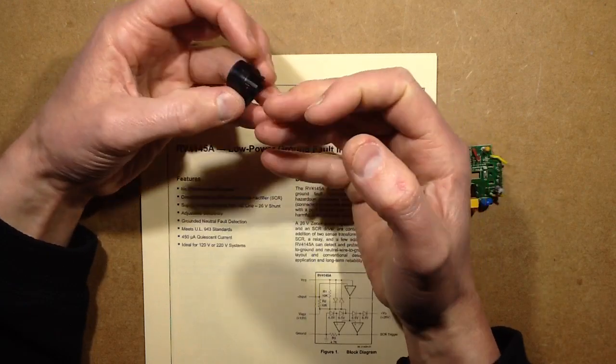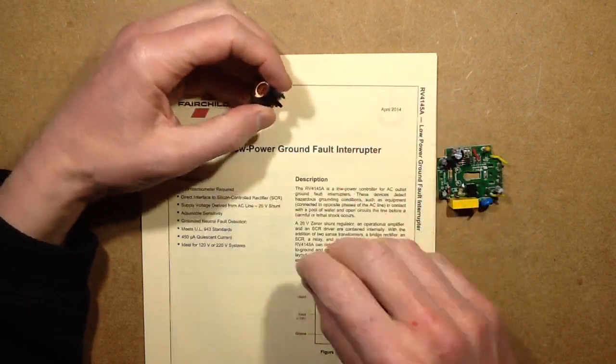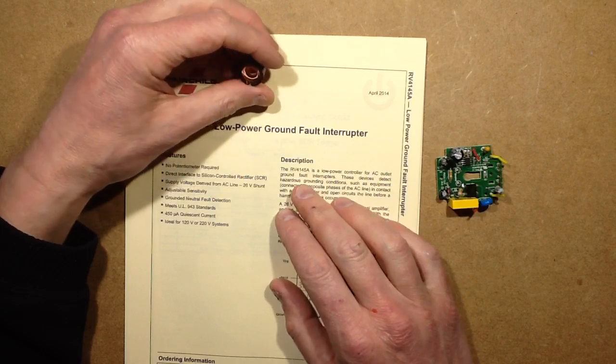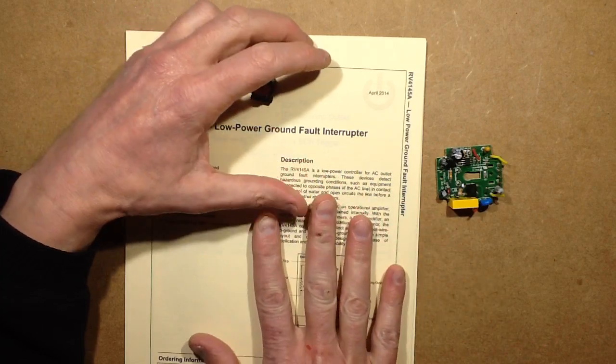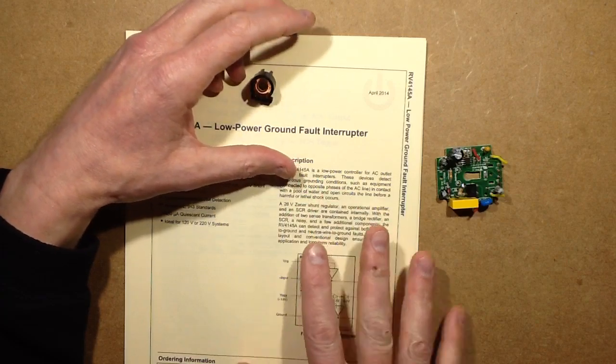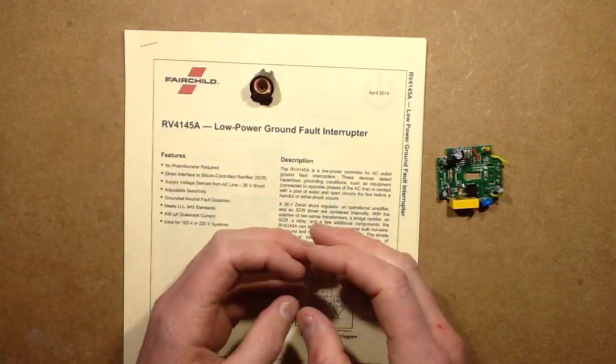I'd always thought the way it detected neutral to earth faults was because the return current, if it's split between the neutral and the earth, then part current flows through each and that's how it detected it. And most instances that probably is the situation.